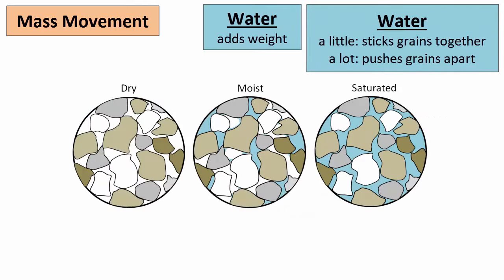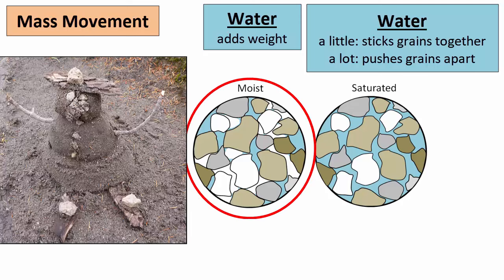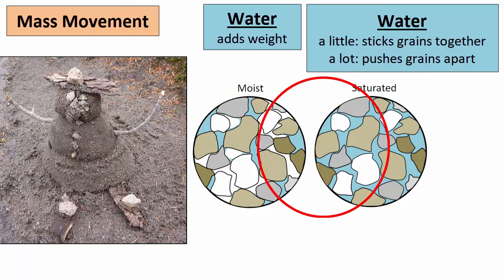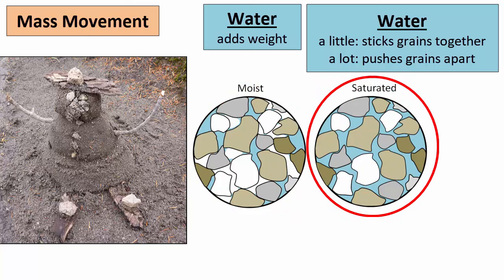Water can increase the likelihood of all these types of mass movement because it both reduces friction and adds weight. The more weight the greater the force of gravity on the hillside. A little bit of water causes small particles to stick together much like when you build sandcastles on a beach. Too much however and it pushes them apart.